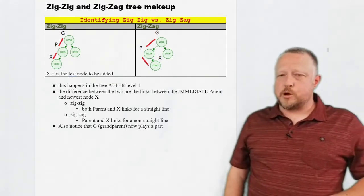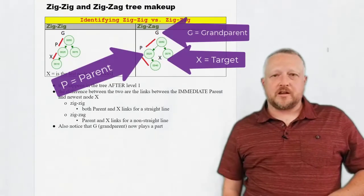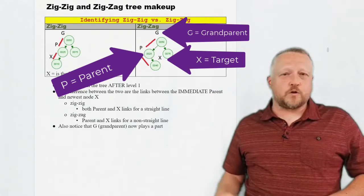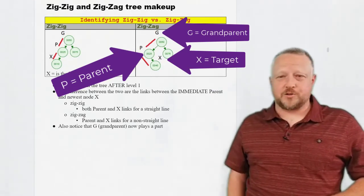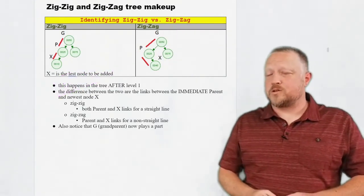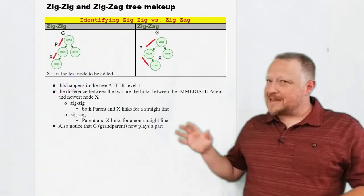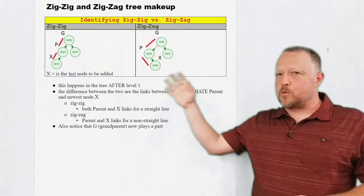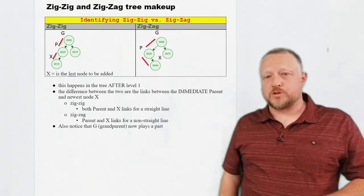But you're also gonna notice a new node that's in there and it's called G. And G literally stands for grandparent in this overall situation. And yes, you're actually gonna see grandparent come back up in some of the other trees that we're gonna go over later. But that's the overall tree makeup that we're gonna have when we go over the rotations here in a second.